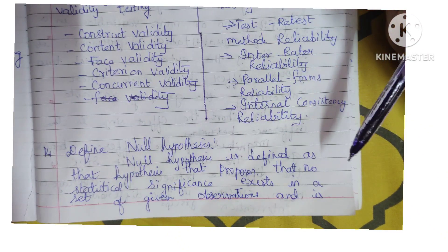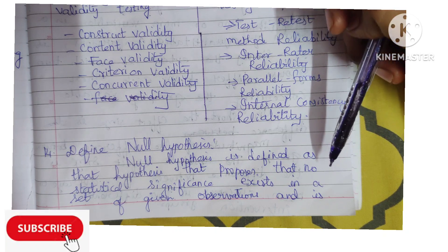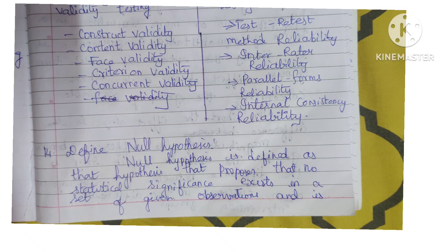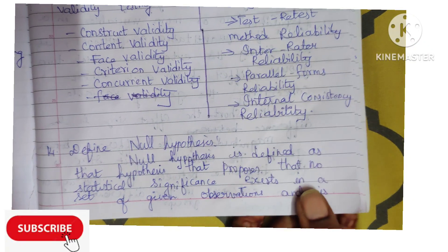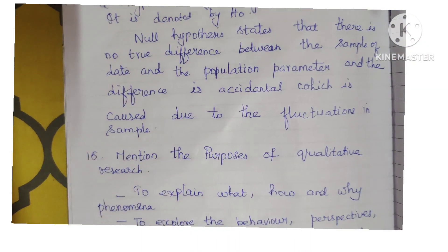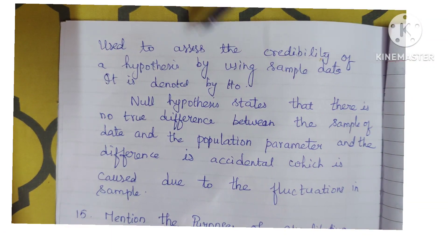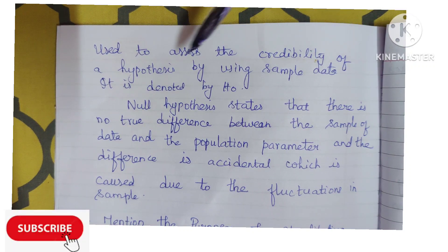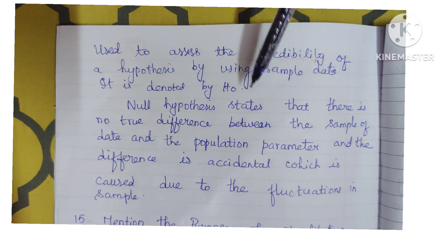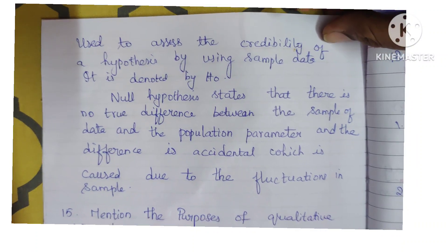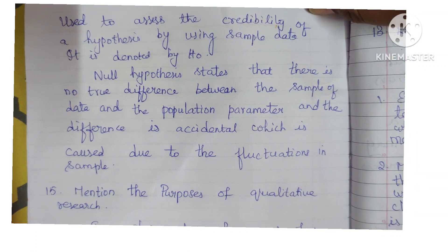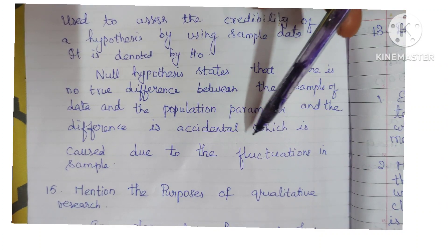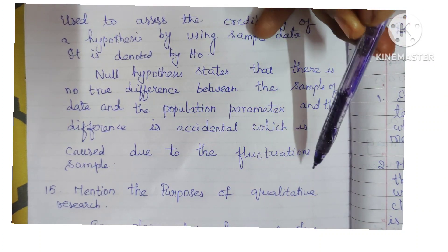Fourteenth question: define null hypothesis. Null hypothesis is defined as that hypothesis that proposes that no statistical significance exists in a set of given observations, and is used to observe the credibility of a hypothesis using sample data. It is denoted by H0. The null hypothesis states that there is no true difference between the sample of data and the population parameter, and the difference is accidental, caused due to fluctuations in the sample.